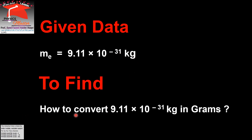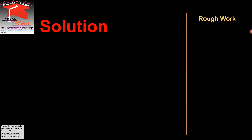To find: how to convert 9.11 into 10 to the power minus 31 kg into grams. Next heading: Solution. For rough work — if you remember, kilo is already a prefix. Kilo is given in the mass of electron: 9.11 into 10 to the power minus 31 kg. We know that kilo is equal to 10 to the power 3.